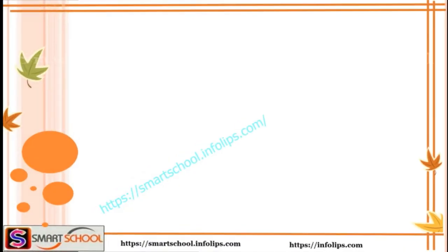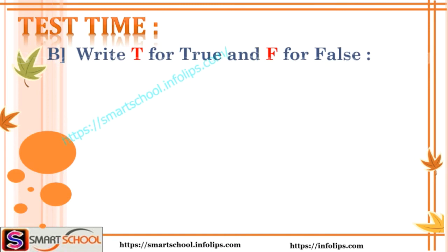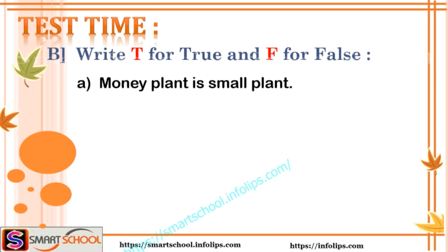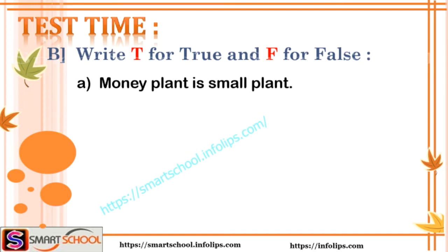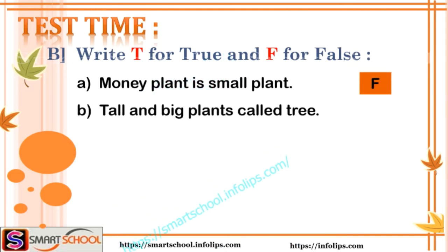Test B: Write T for true and F for false. Is money plant a small plant? False — because money plant is a climber. Are tall and big plants called trees? True.